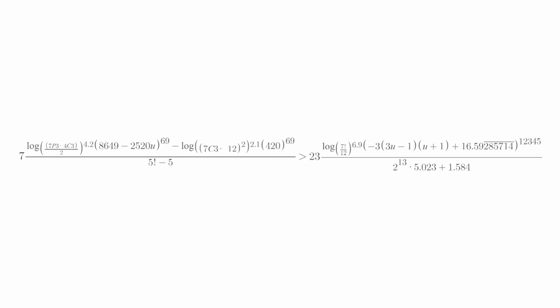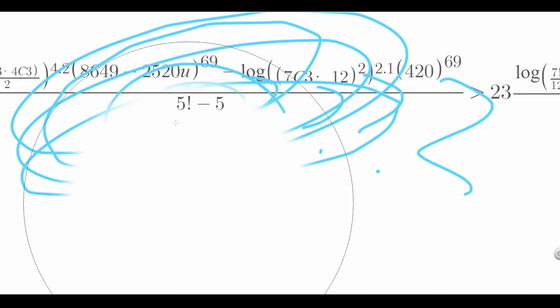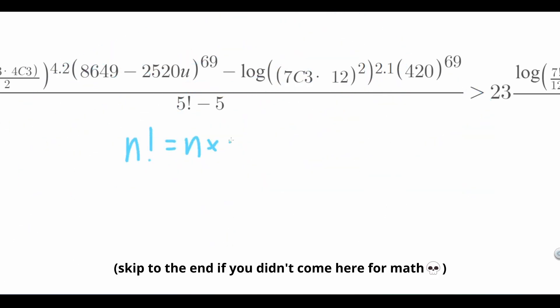First off, let's simplify this by solving small parts of the inequality. Let's start with this. What the hell is this? This exclamation point is a factorial.